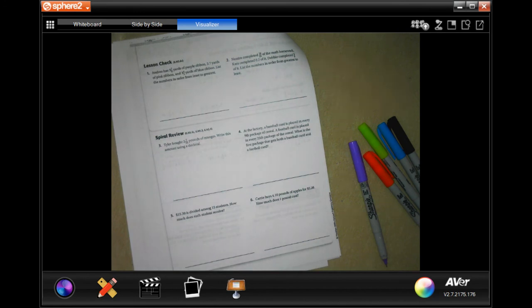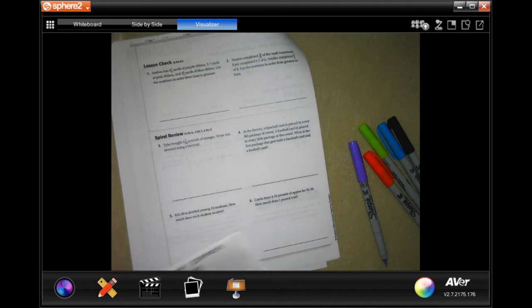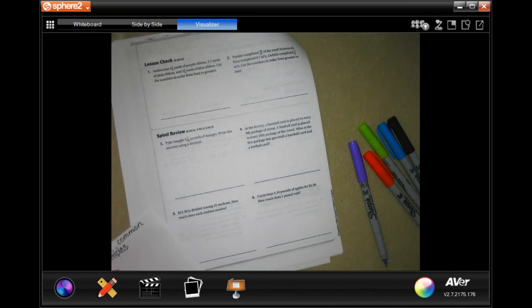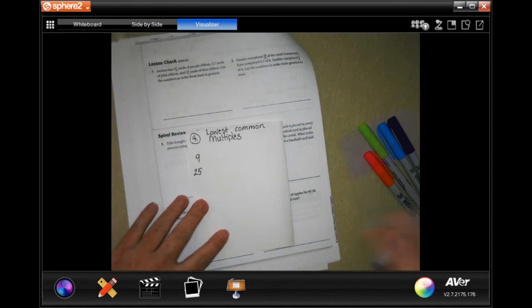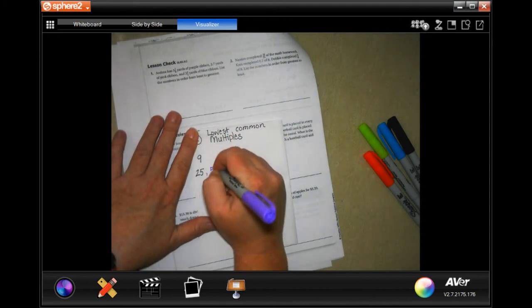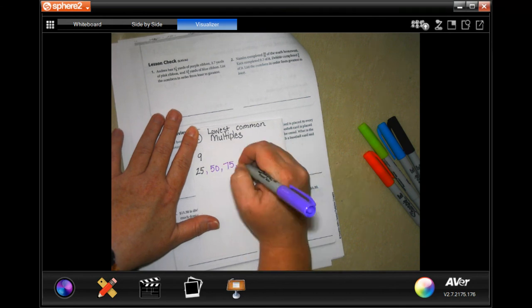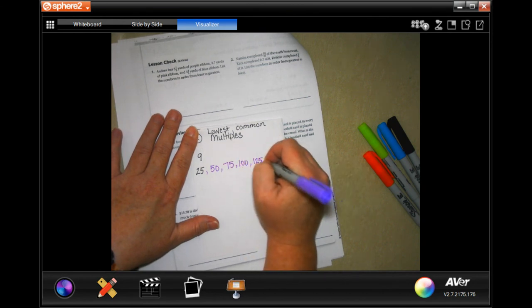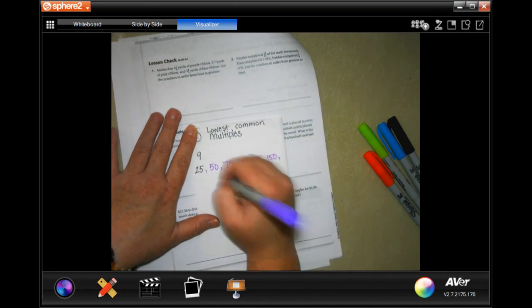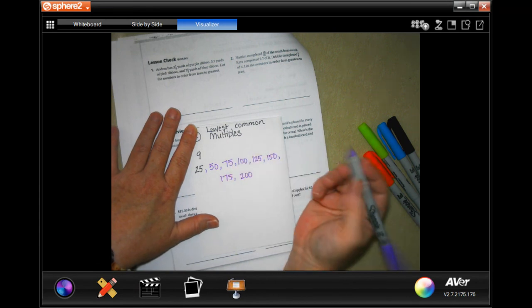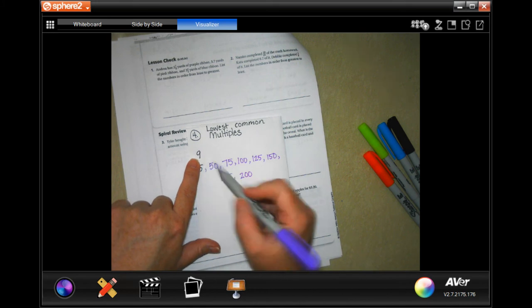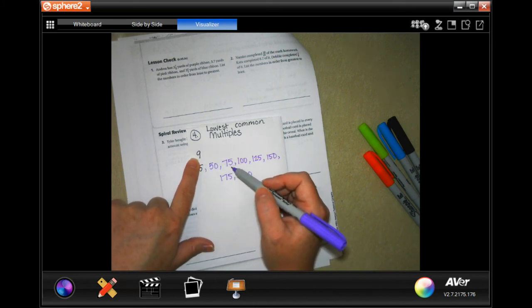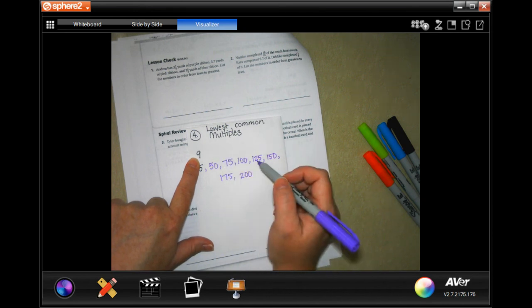We're going to go on to number 4 in the spiral review. It says, at the factory, a baseball card is placed in every 9th package of cereal. Football cards placed in every 25th package of cereal. What's the first package to give both baseball cards and a football card? So, lowest common multiple, guys. Let's do it. So, I'm going to write down a few of my 25s because they're so much bigger. 125 and 200. Let's see. I know that 9 doesn't go into 50. I know that it doesn't go into 75. I know it doesn't go into 100 evenly. I don't know about 125.